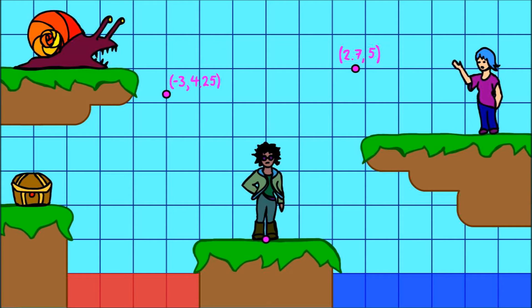Or negative 3, 4.25 if you want to be 3 blocks to the left of the origin and 4.25 blocks above it. And so on.